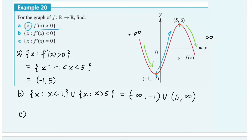In question C, we want to find the value of x such that the derivative function is equal to zero. As mentioned in part A, at the two stationary points the derivative function is equal to zero. So the answer is x equals negative one and x equals five — at these two stationary points, the derivative function equals zero.